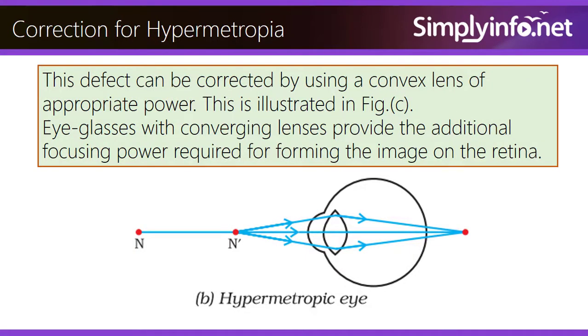Correction for hypermetropia. This defect can be corrected by using a convex lens of appropriate power. This is illustrated in figure C. Eye glasses with converging lenses provide the additional focusing power required for forming the image on the retina.